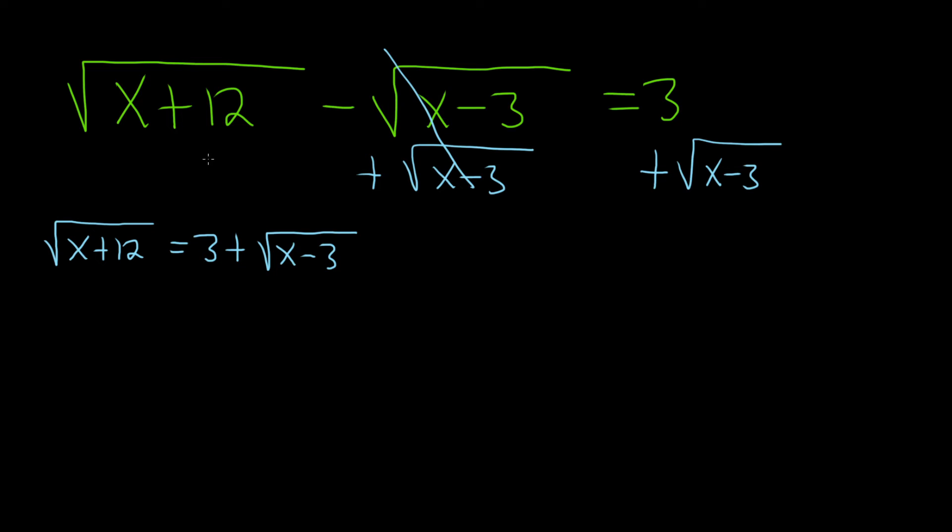Once you have one square root isolated, square both sides to eliminate it. When you square the square root, it goes away, so you just get x plus 12. That part's pretty easy.